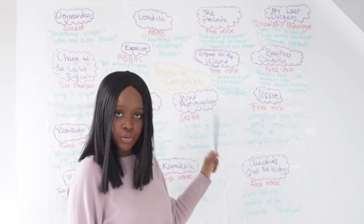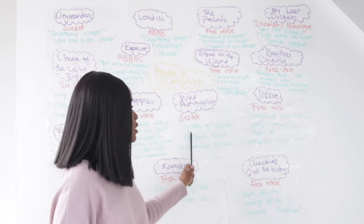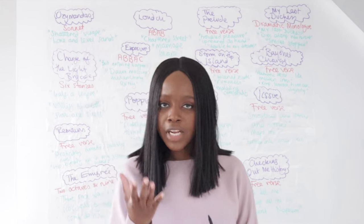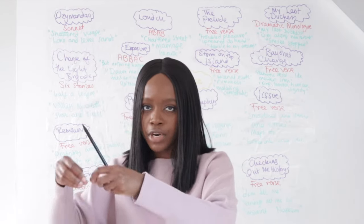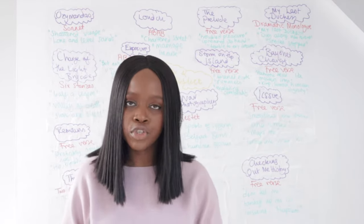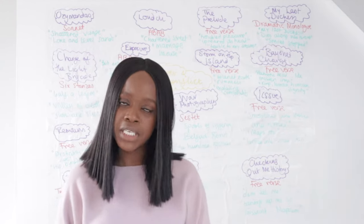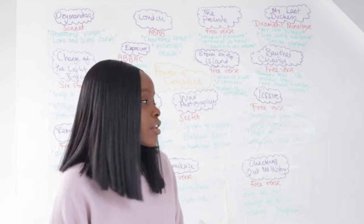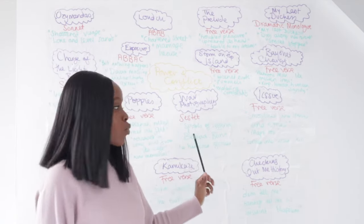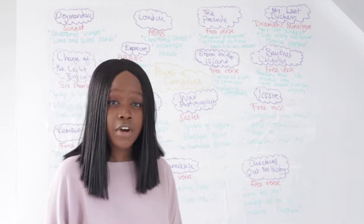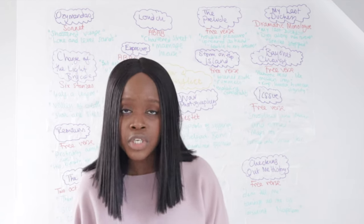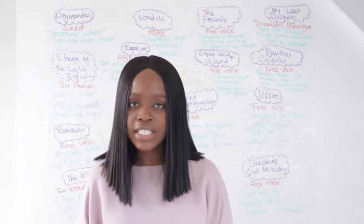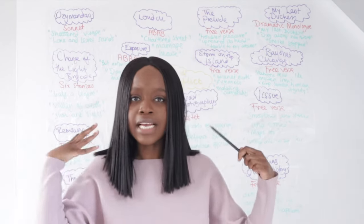The next poem is War Photographer, written in sestet form — six-line stanzas. The first quotation is 'spools of suffering': Carol Ann Duffy uses metaphors related to photography, where the spools in the developing water reveal images of people going through great suffering. The next quotation references cities impacted by war — Belfast and Beirut. The final quotation, 'a hundred agonies,' uses hyperbole to show suffering around the world that people in peaceful western countries can't comprehend.